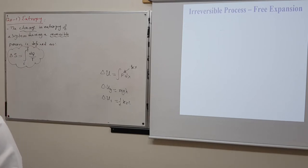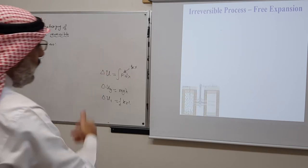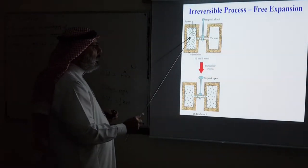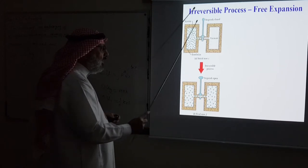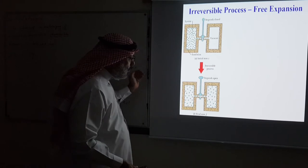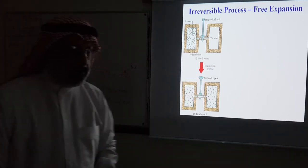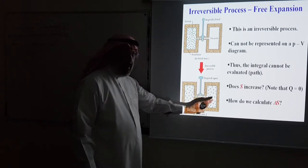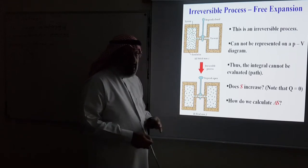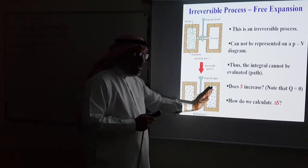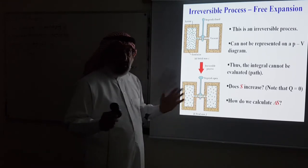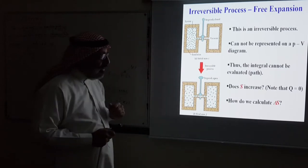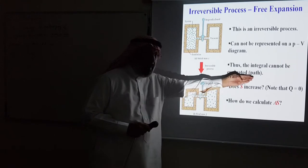We play a trick: replace the irreversible process with a reversible one. One of the best examples of an irreversible process is free expansion. In free expansion, an insulated chamber with two compartments — one filled with gas, one vacant — allows gas to expand and fill the whole volume when the stopcock is opened. This is irreversible: the gas molecules will never spontaneously return.